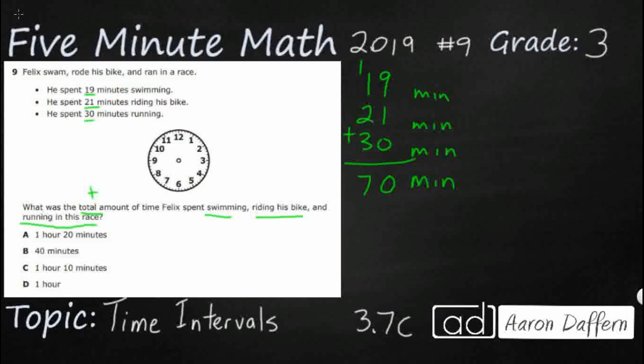So 70 minutes. What I'm going to do is, we're going to keep the 70 minutes, we know it's 70 minutes. For the most part we can probably say it's not going to be 40 minutes because it's more than that, but let's say I don't know how to turn minutes into hours and minutes. How can we use an analog clock to do that?